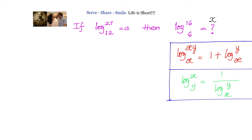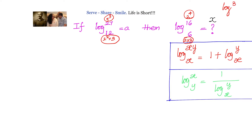Look at the prime factorization of the numbers we have. 27 can be written as 3 cubed. 12 can be written as 2 squared times 3. 16 can be written as 2 to the power 4. And 6 is 2 times 3. The least values we see here — everything is in terms of 2 and 3 — so we can take either log 2 to base 3 or log 3 to base 2 as our common logarithm.